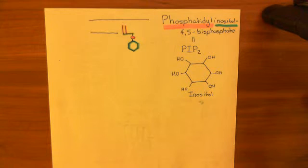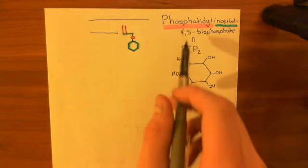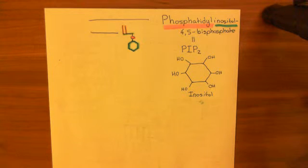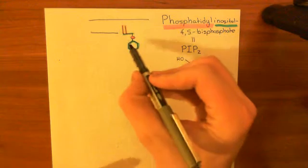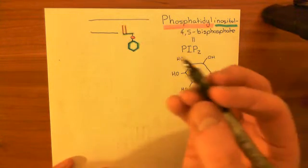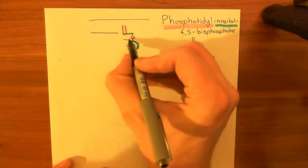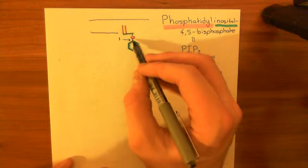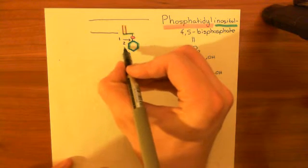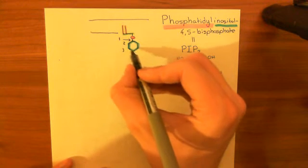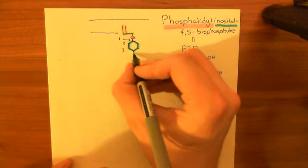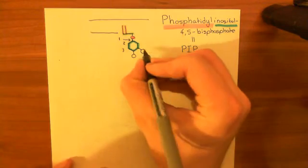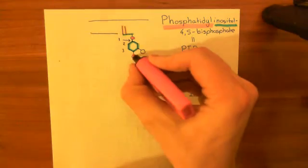Now we need to turn phosphatidyl inositol into PIP2 — phosphatidyl inositol 4,5-bisphosphate — by adding more phosphate groups onto this inositol ring. You label the carbon bonded to the phosphate group as the first carbon, then second, third, fourth, fifth, sixth. We want phosphate groups coming off the fourth carbon and the fifth carbon. So now we have created phosphatidyl inositol 4,5-bisphosphate, or PIP2.